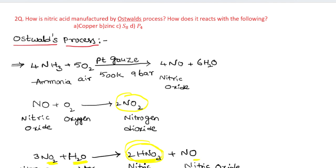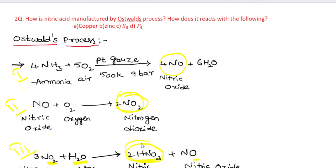In Ostwald's process, there are three steps: first step — nitric oxide is formed; second step — nitrogen dioxide is formed; third step — nitric acid is formed. These are the three steps involved in Ostwald's process.